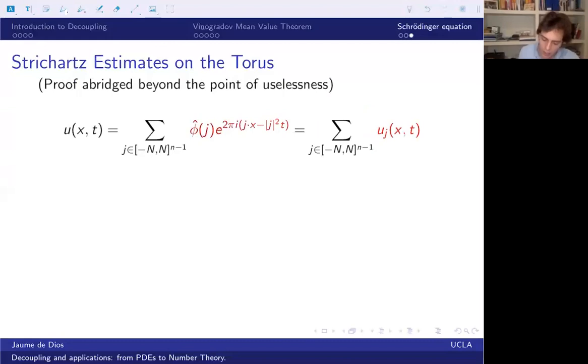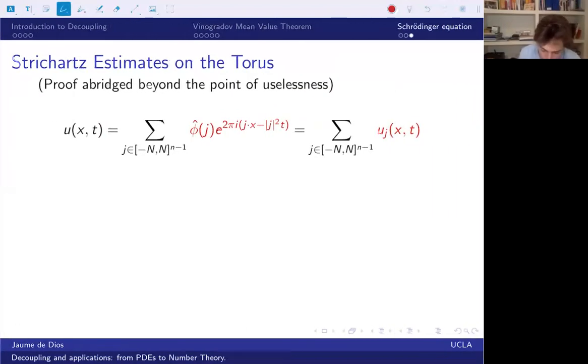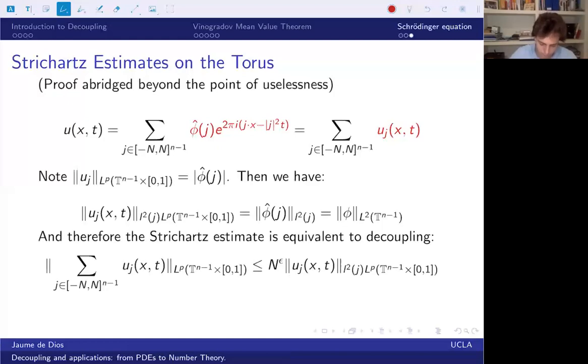Again, we have a sum of functions. That's the setup of the decoupling. You have a function, that's the sum of functions. We've already told that these functions have Fourier transform in a parabola or a paraboloid. You can just check like the frequency lives in a parabola or paraboloid. And again, we've been able to write our function as a sum of functions living in a geometric object. So what can we do now? The first thing we have to do is compute the norm on the right-hand side.